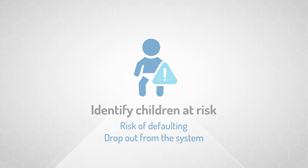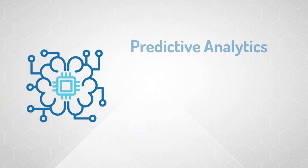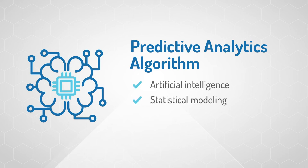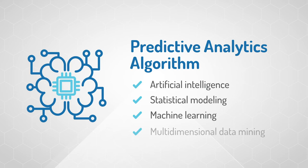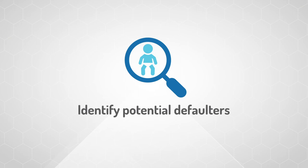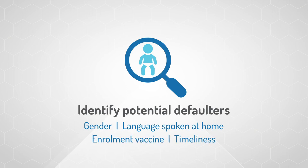To address this issue, IRD developed a predictive analytics algorithm that leverages artificial intelligence and uses statistical modeling, machine learning, and multidimensional data mining techniques. The algorithm can accurately identify potential defaulters using individual and vaccinator-level predictors including child's gender,